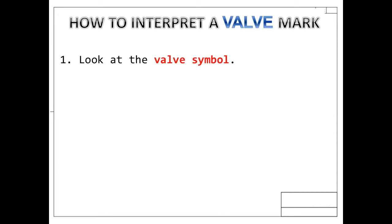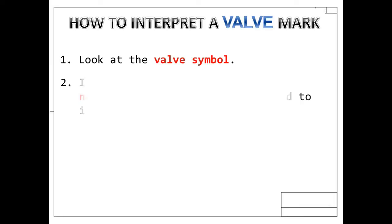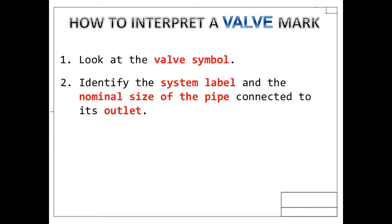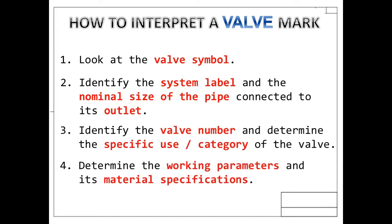For valve marks: first, take a look at the valve symbol. Identify whether it is a globe, gate, non-return, or whatever valve type it is. Next, identify the system label and the nominal size of the pipe. Once the specific use of the valve has been identified, you can now determine the working parameters of the valve, including its material specifications.